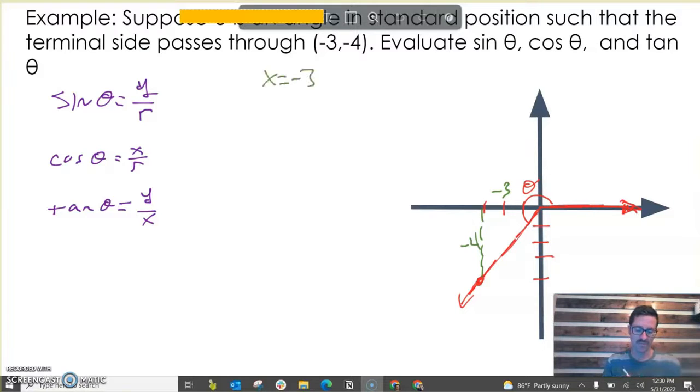So we have almost everything we need. The only thing we're lacking is r, the radius. That would be this length right here, the hypotenuse to this right triangle we've constructed. If I use the Pythagorean theorem here, you should get five. Keep in mind our radius, because it is a length, we're always going to consider it positive. Even though we're in the third quadrant where x and y are both negative, we're going to look at our radius as a positive value.